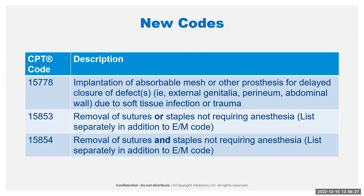The new codes are for the removal of sutures or staples, or the removal of sutures and staples, and these are not requiring anesthesia. You can list these in addition to your E&M code. In the physician fee schedule, code 15853 has a reimbursement just under $15 and the 15854 is just under $20. Of course it's going to change depending on your location and whether you're rural, suburban, that kind of thing.